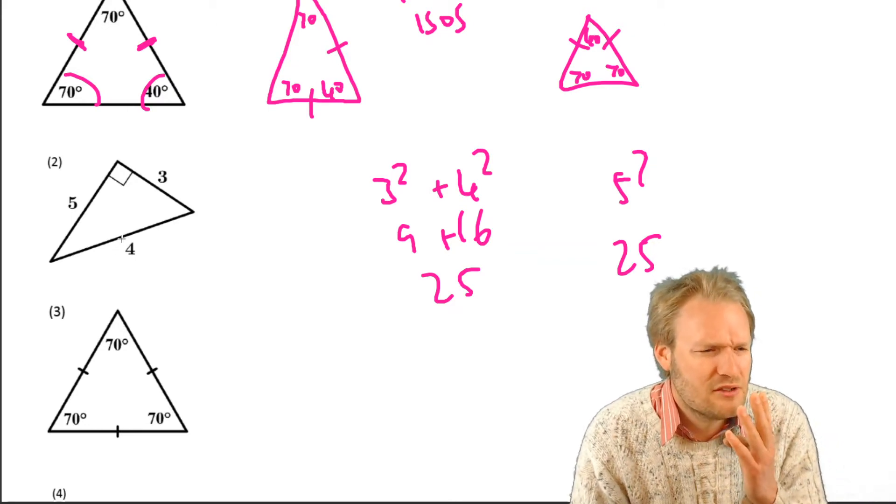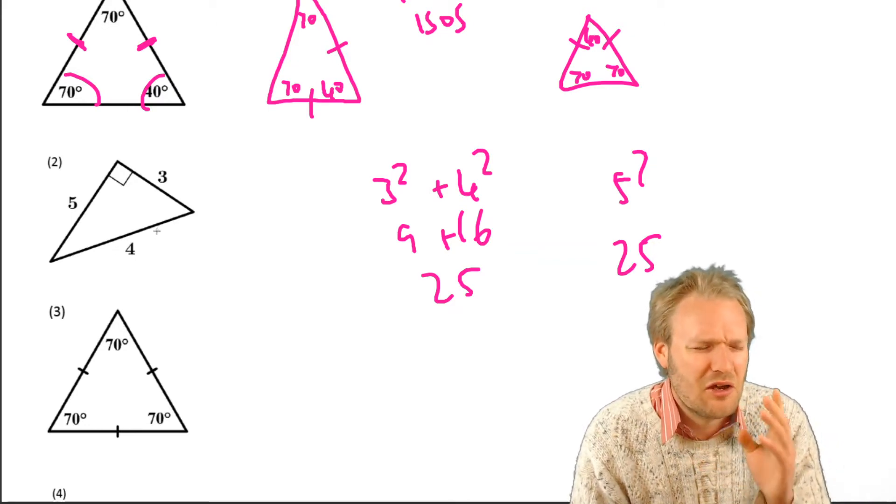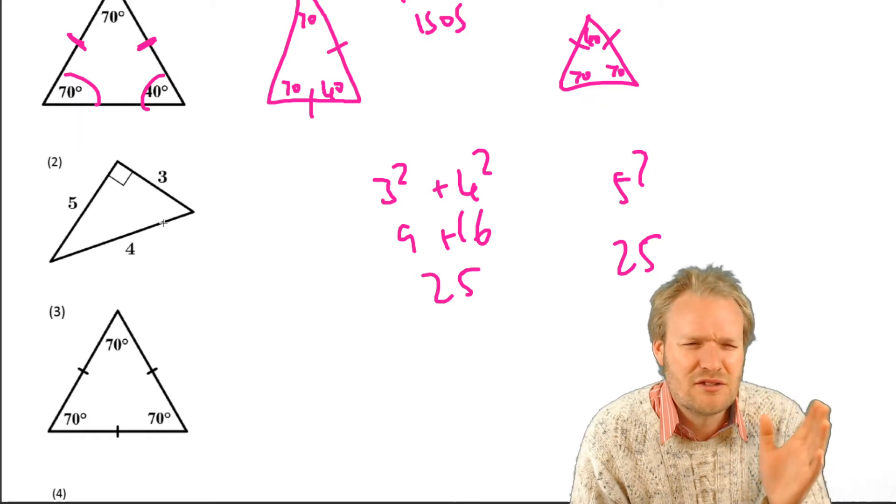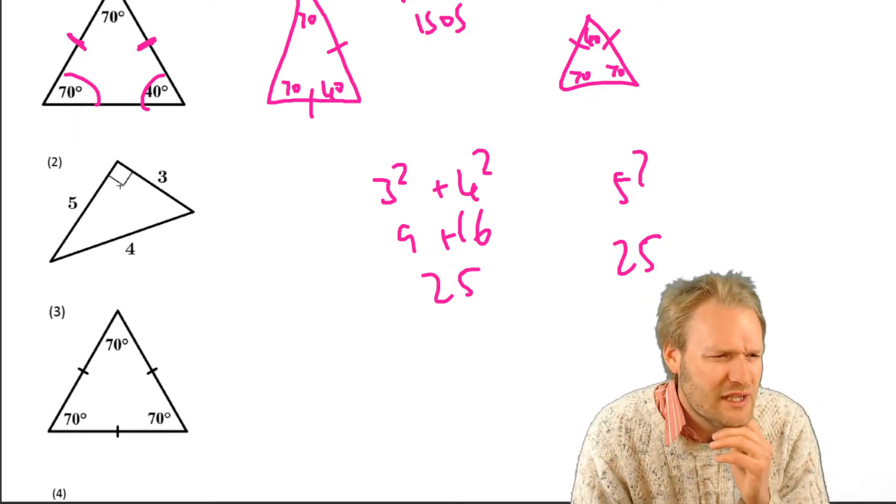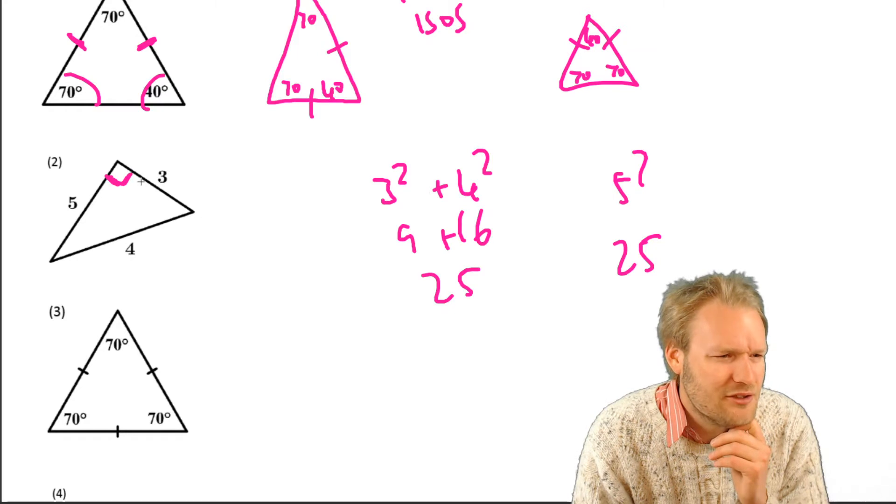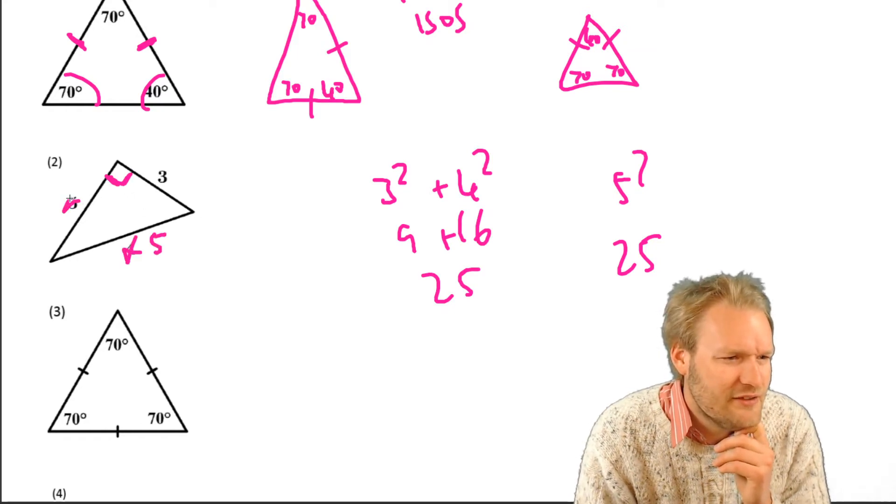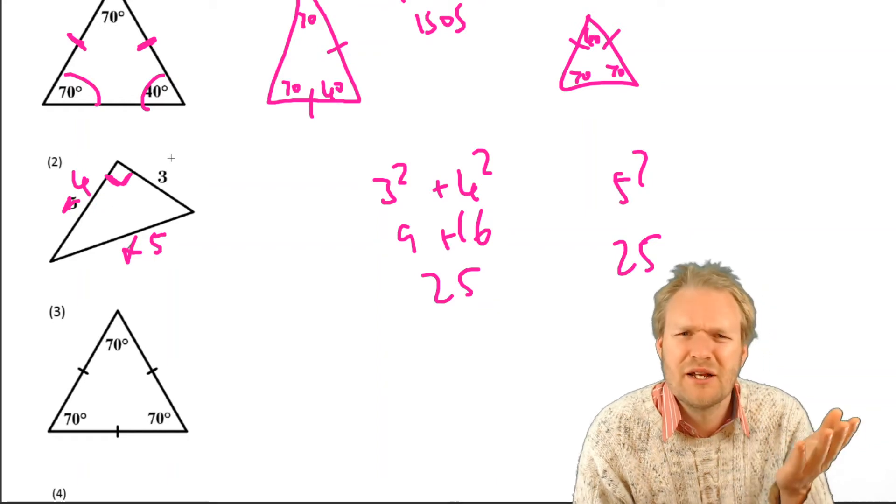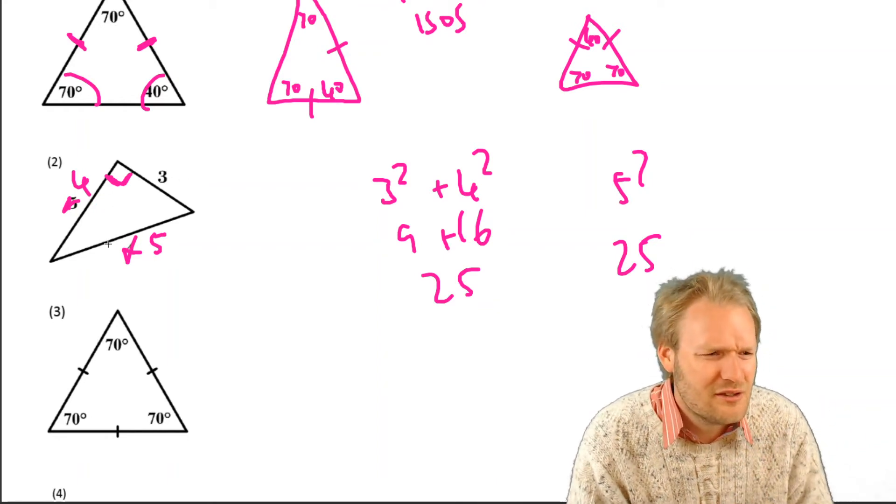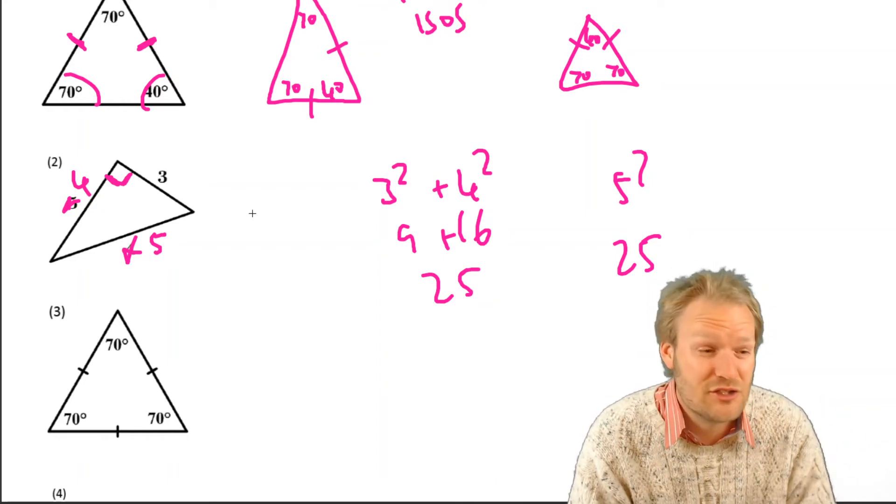But wait a second. There's something about the longest side opposite the biggest angle. Well, 90 degrees, this is our biggest angle. So hang on a second. Maybe that should have been a 5 and that should have been a 4. Something like that, maybe. But this side must be the longest side.